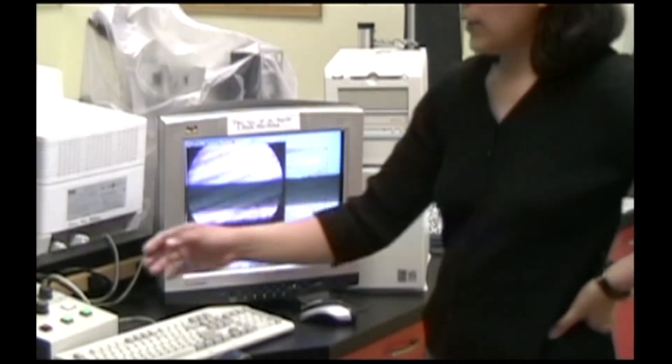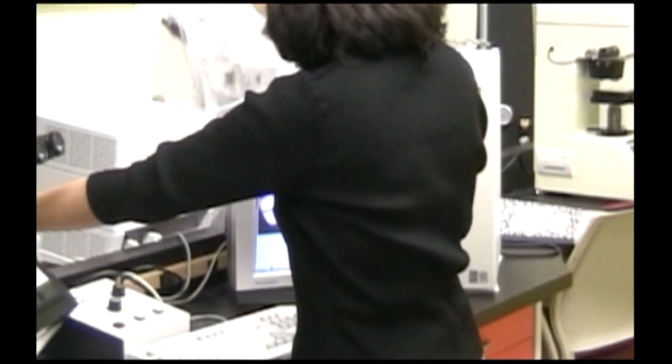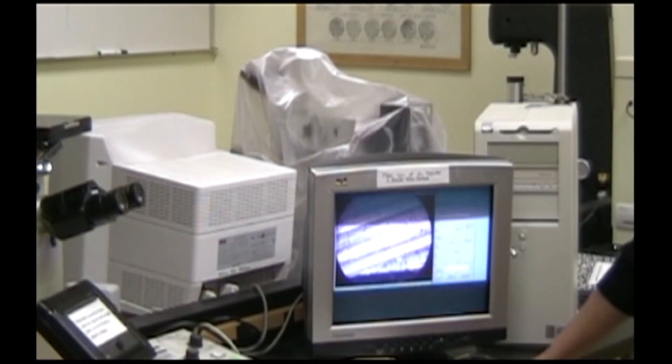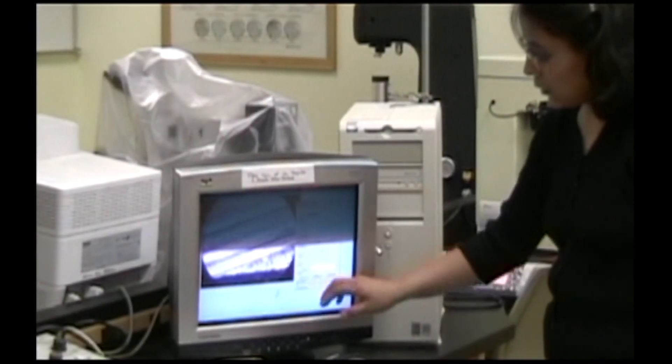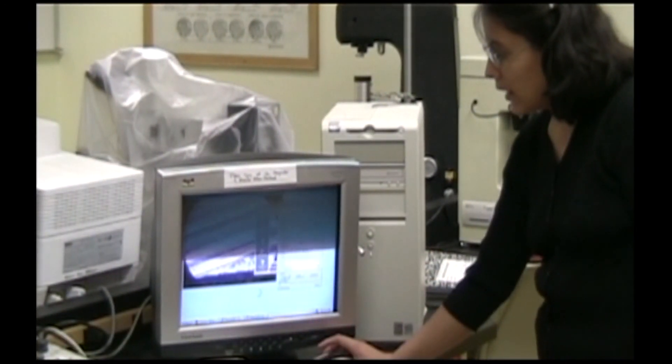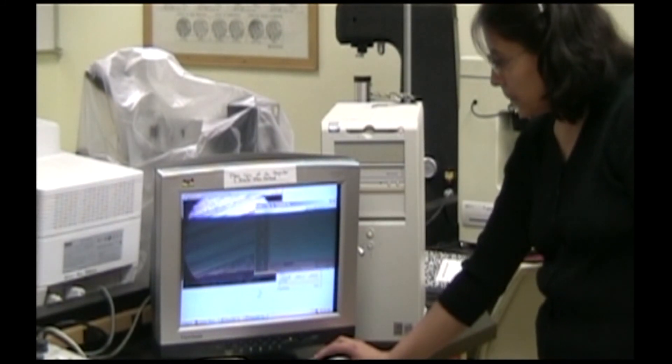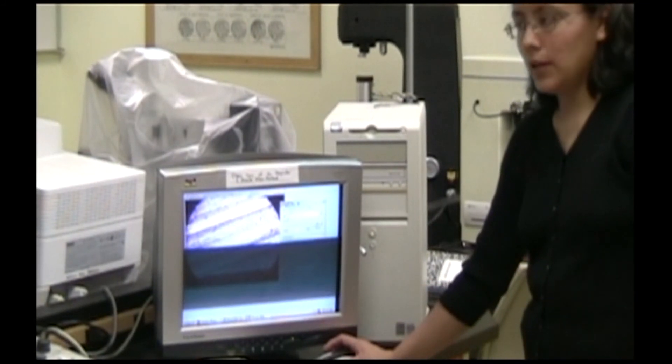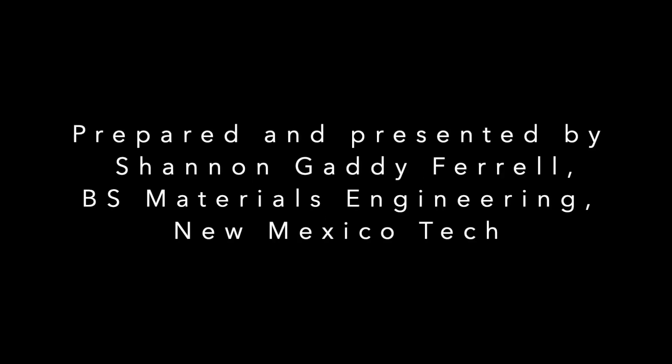This image is blurry. You can fix that by adjusting the fine focus knob while looking at the computer screen. When you're satisfied with this image, you can choose save as and tell the software where you would like to save your file. Click snapshot so that it will actually save the image to that file.